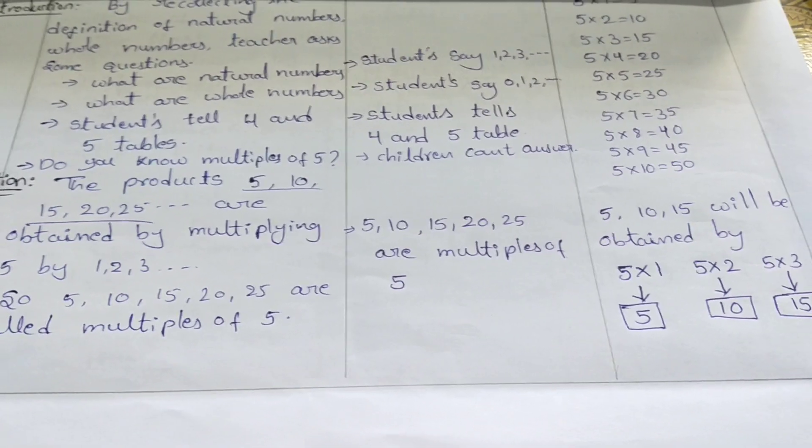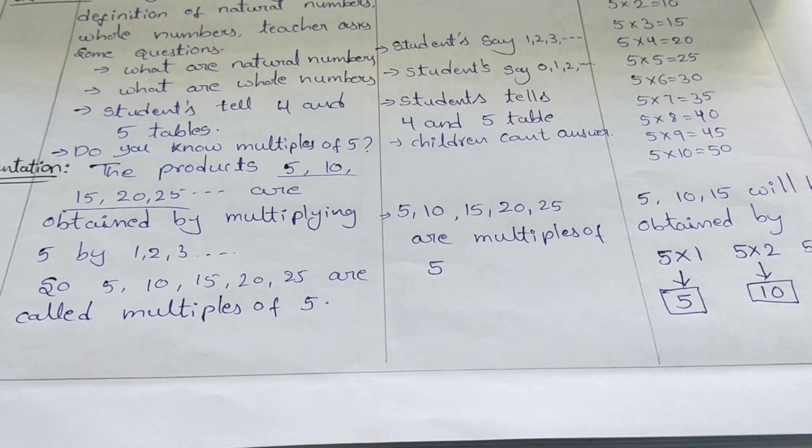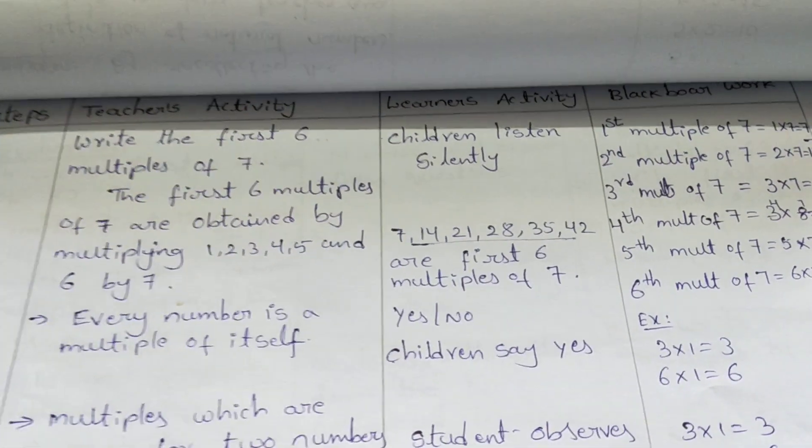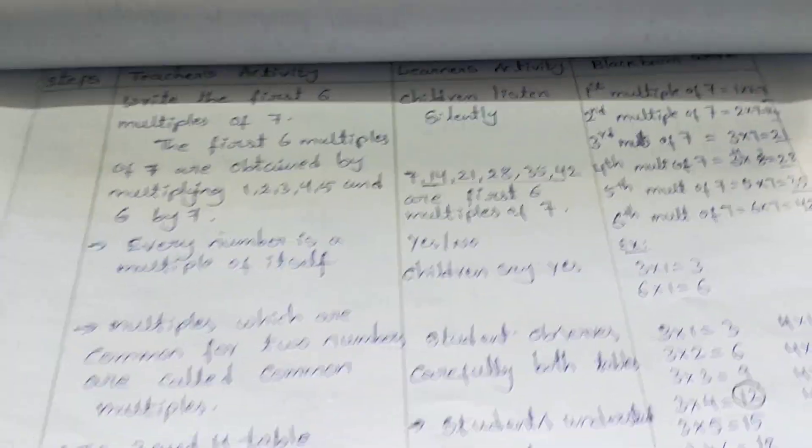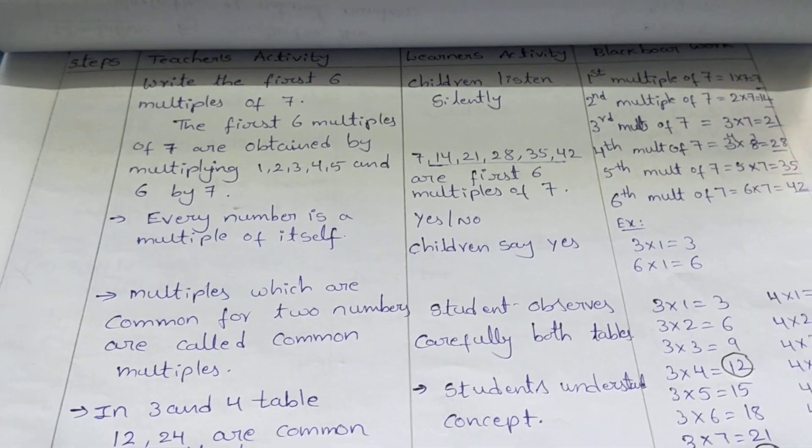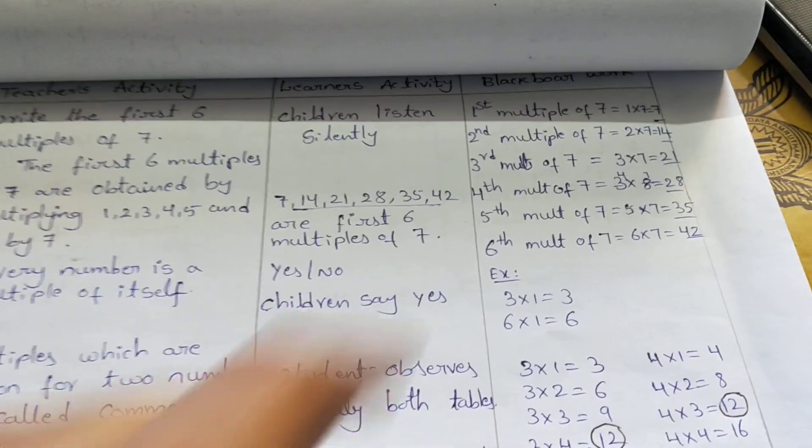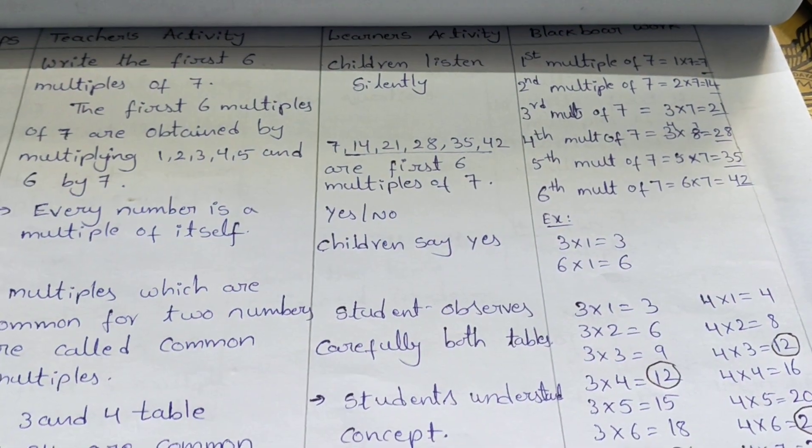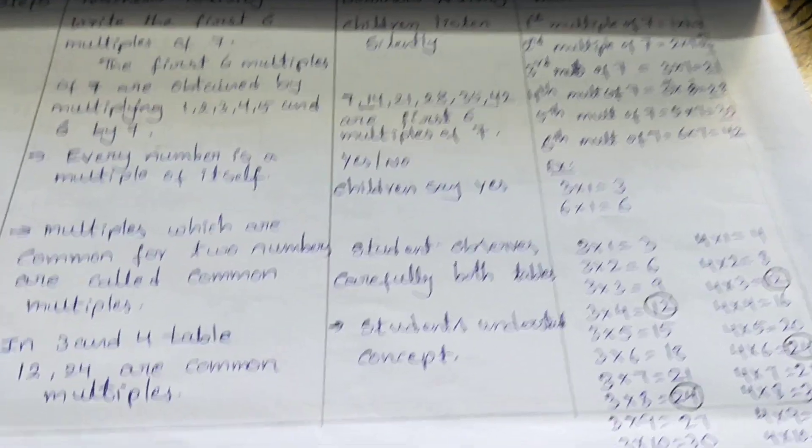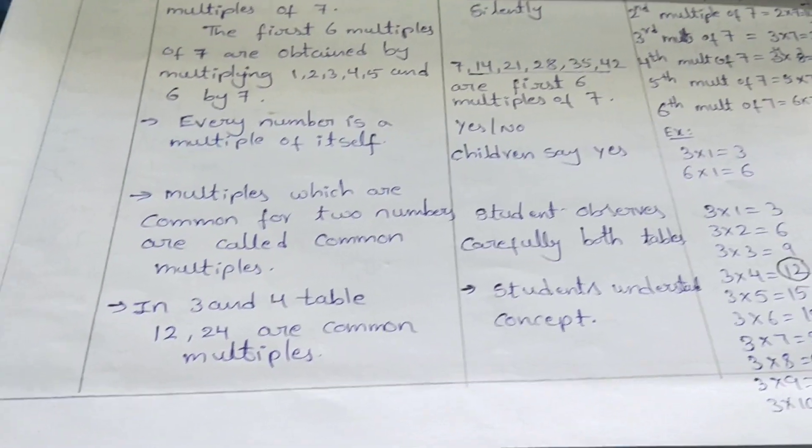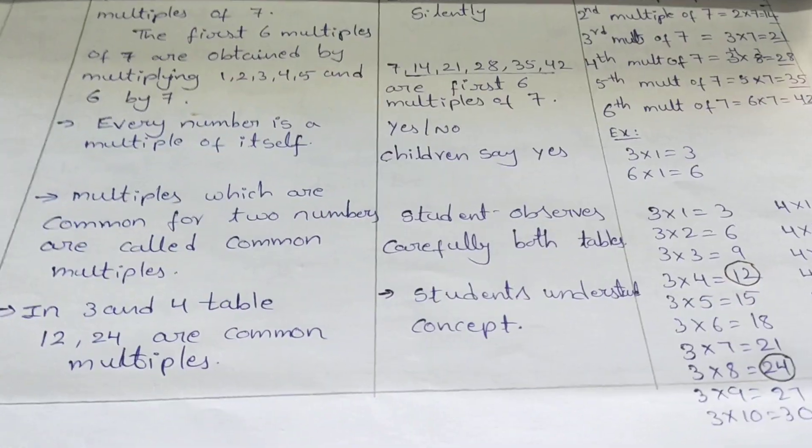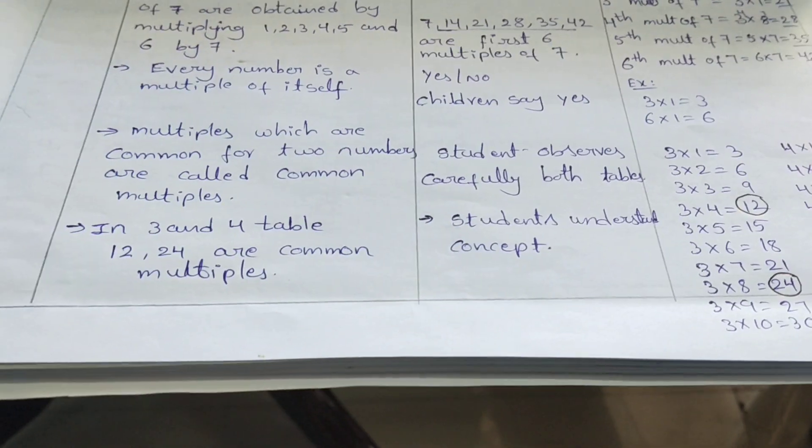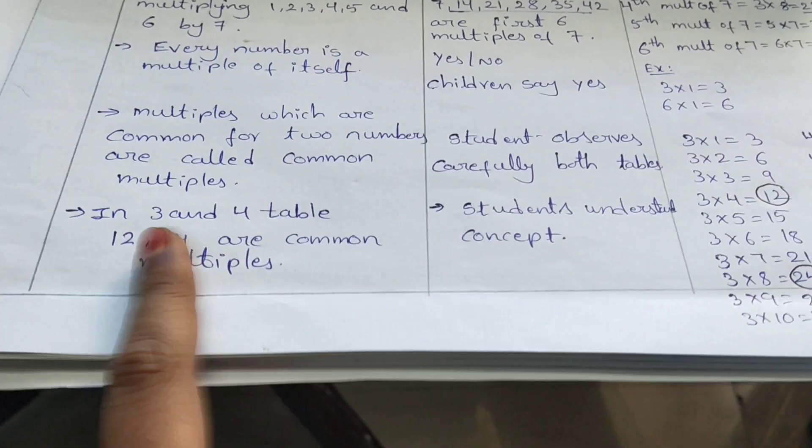Presentation: Write the first six multiples of seven - 7, 14, 21, 28, 35. How they will get: first multiple of 7 is 1 into 7, second multiple is 2 into 7, third multiple is 3 into 7, like that. So every number is a multiple of itself. Teacher explains clearly on the blackboard about common multiples.